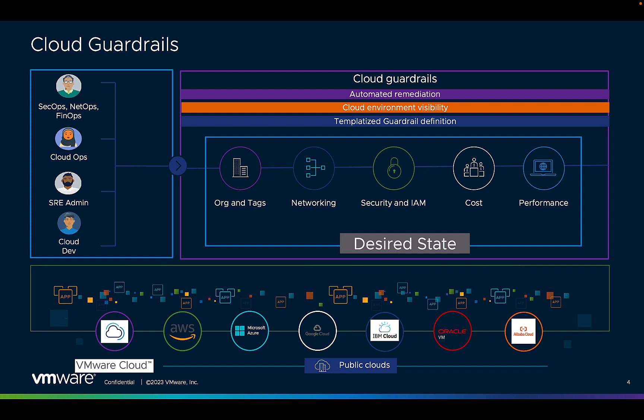Cloud Guardrails allows cloud ops teams to manage their compliance posture across cloud organization setup, network, IAM, and security across any public cloud, managing both greenfield and brownfield cloud environments. Guardrails are instantiated and discovered to ensure applications are compliant with policies at all times. When applications don't comply with policies, Guardrails will provide consolidated visibility across all violations at an application level and provide automated remediations, which are customizable per the needs of the customer.